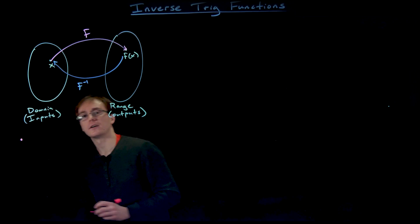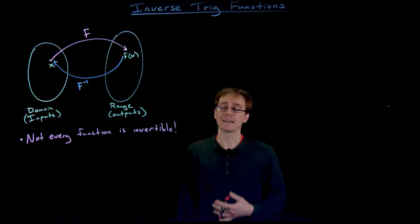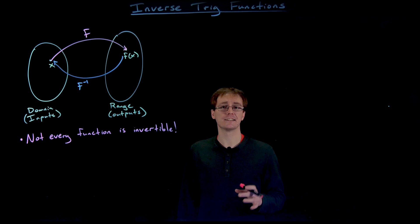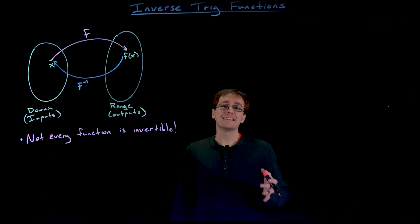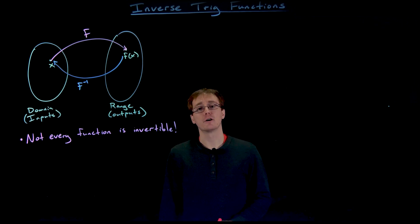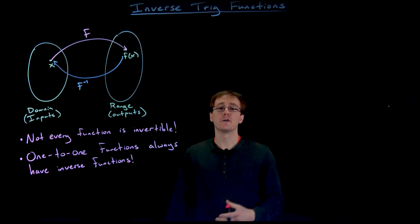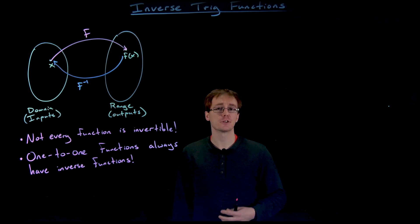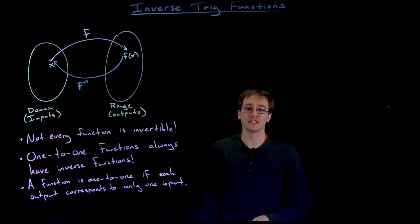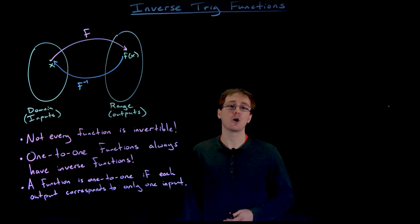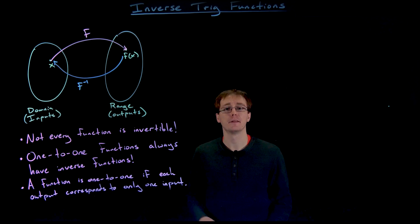We're going to need a few more facts about inverse functions before we apply those to our inverse trig functions. One important one is that not every single function is actually invertible. What I mean is the inverse of every function is not always itself a function. There is a condition that guarantees our function will have an inverse that is also a function, and that's when we call a function one-to-one. If our function is one-to-one, then it will always have an inverse that is also a function. We say a function is one-to-one if each output corresponds to one and only one input. Our trig functions are not actually one-to-one, so we have to come up with a way to overcome this issue.